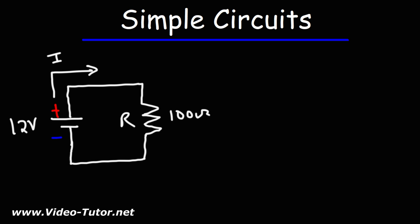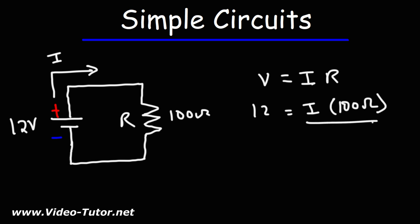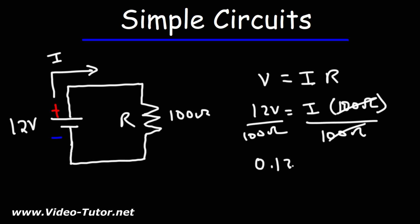So how can we calculate the amount of current flowing through this resistor? We could use Ohm's law: voltage is equal to current times resistance. We have 12 volts connected across the resistor and the resistance is 100 ohms. Solving for I, the current, we just divide 12 volts by 100 ohms. 12 divided by 100 is 0.12, so the current is 0.12 amps, which is equivalent to 120 milliamps.